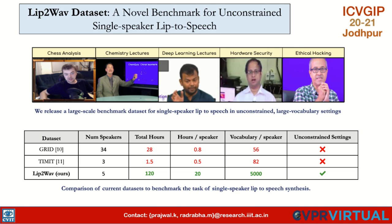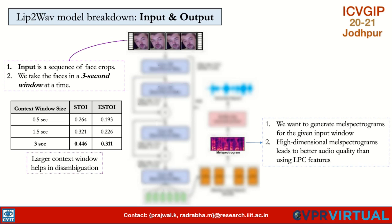We present Lip-to-Wave, a sequence-to-sequence network that generates speech from only lip movements for a particular speaker. The input to our model is a sequence of face crops. A smaller window is detrimental due to lack of context, so we use a 3-second window containing 90 frames for a 30 fps video. Our network is trained to generate a mel spectrogram corresponding to the ground truth speech, as opposed to LPC features used by some prior works which lead to poor quality speech.